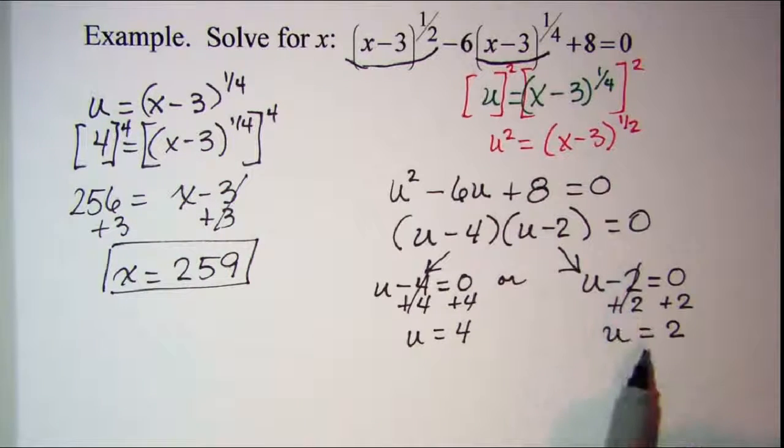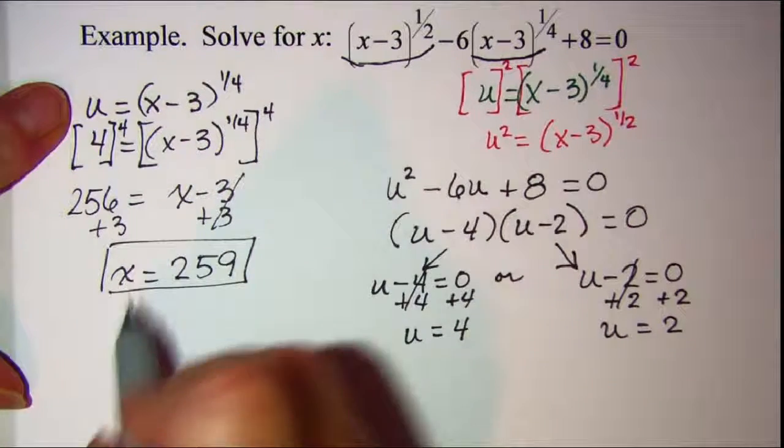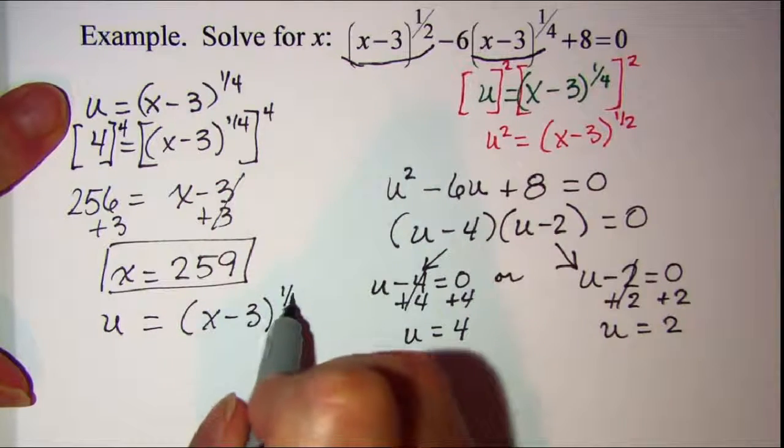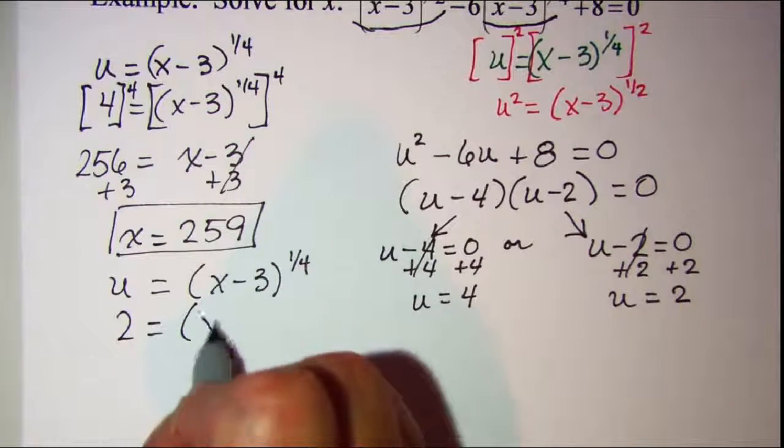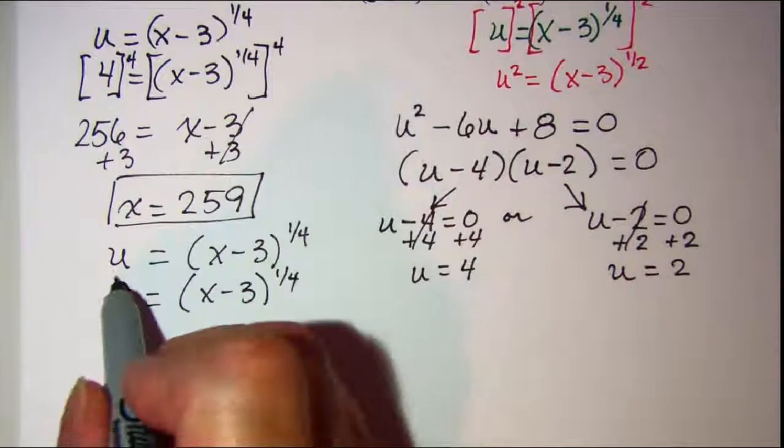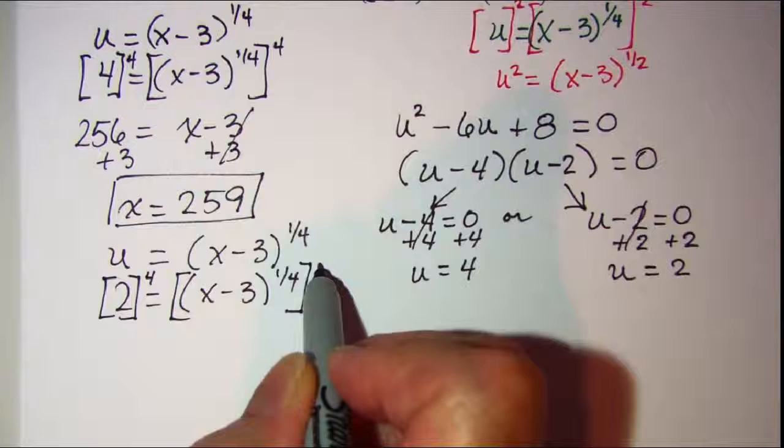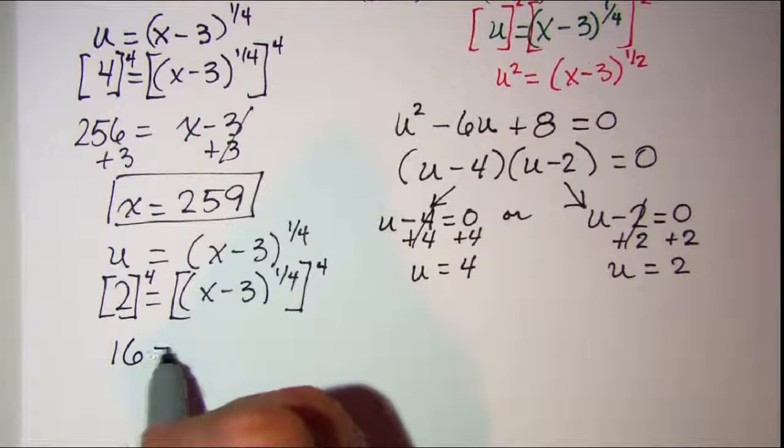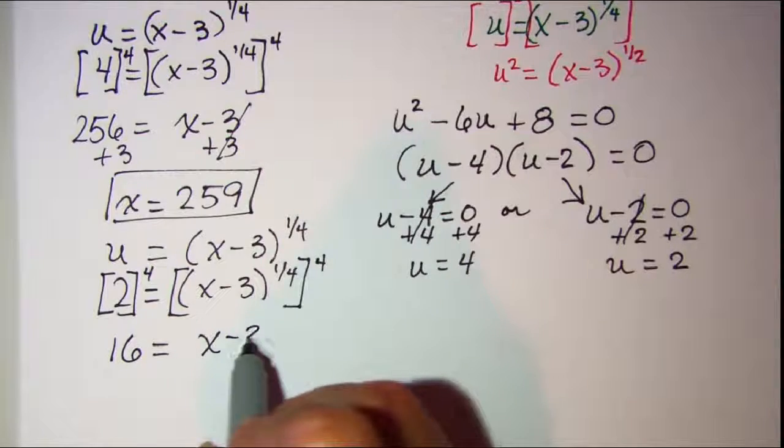Let's do the same thing with the value of two substituted in for u. So I have u equals the quantity x minus three to the one-fourth. Put two in for u. Then I can raise both sides to the fourth power. On the left side I have 16. And one-fourth times four is one, so I just have x minus three on the right. Add three to both sides.